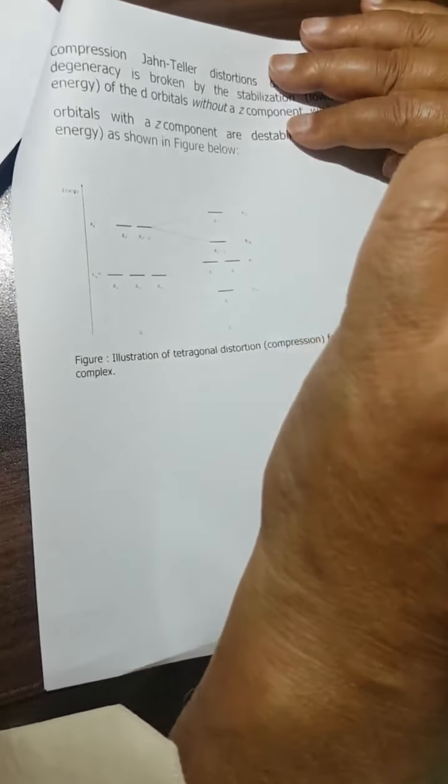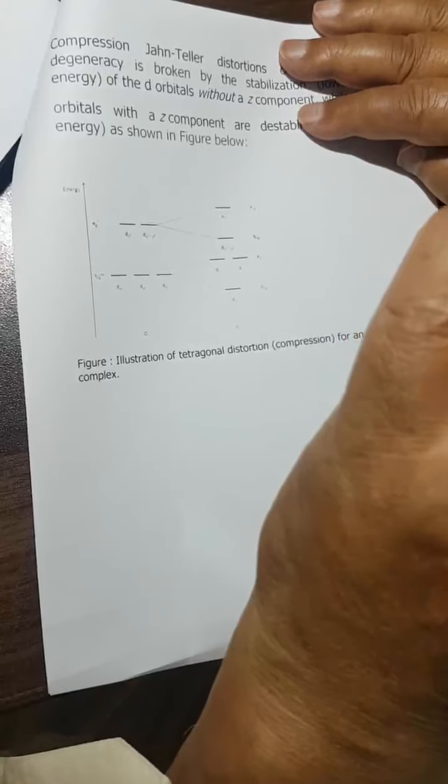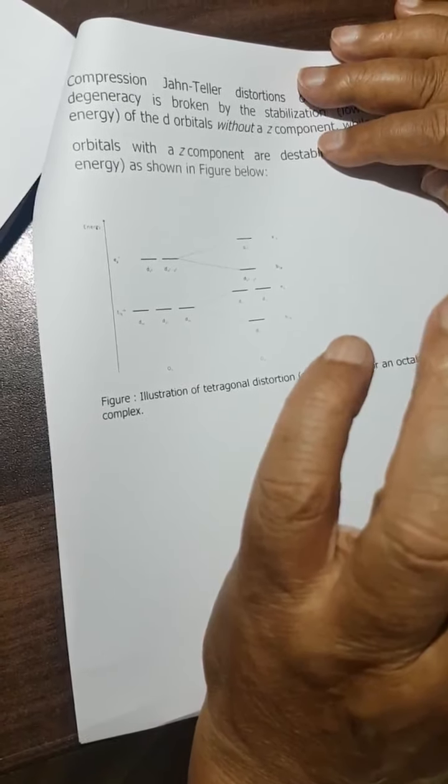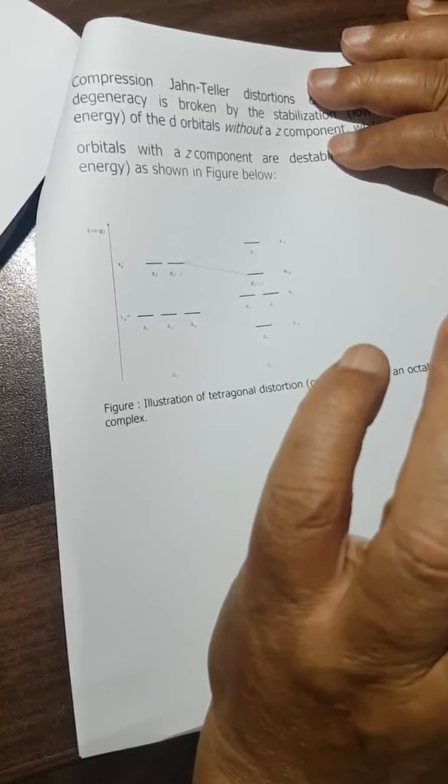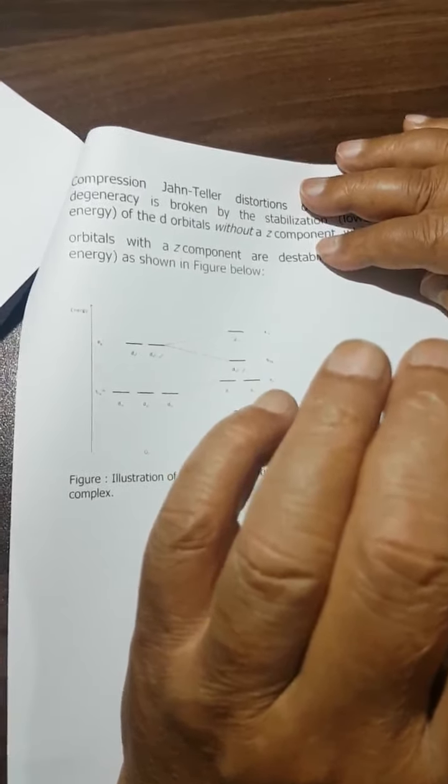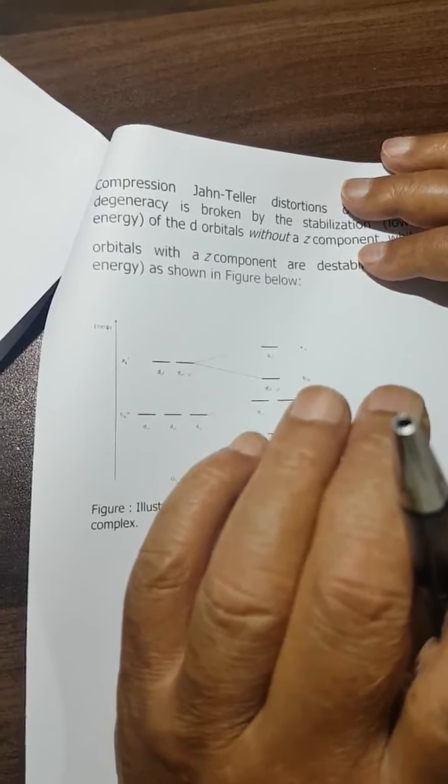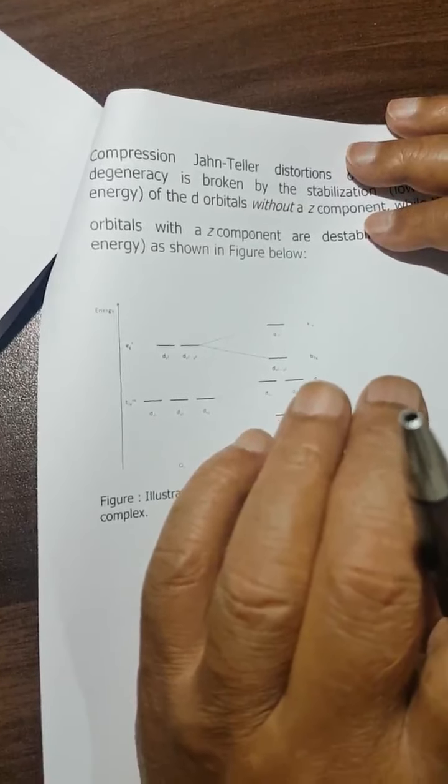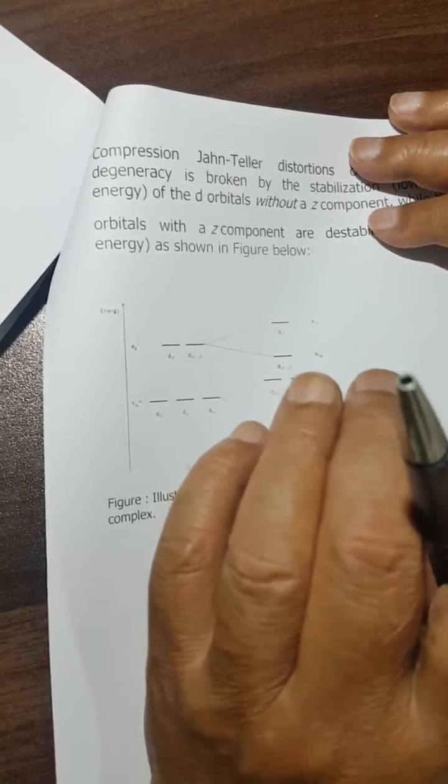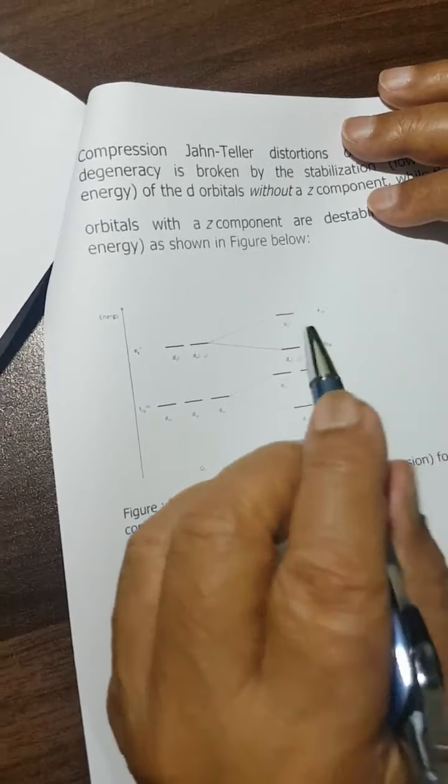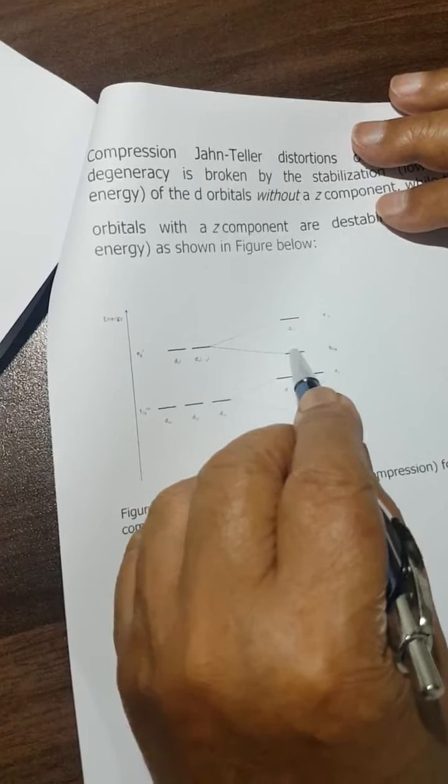The ligand and metal orbitals are approaching each other more closely, resulting in a stronger bond and more stabilization, so it comes down.